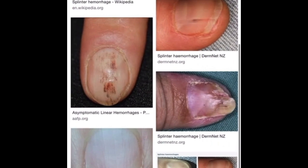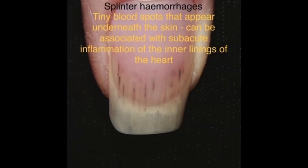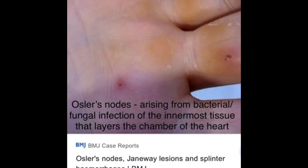This is another condition known as splinter hemorrhages. In splinter hemorrhages, there are tiny blood spots that appear underneath the skin, and this can be associated with inflammation of the inner linings of the heart.